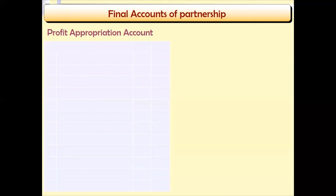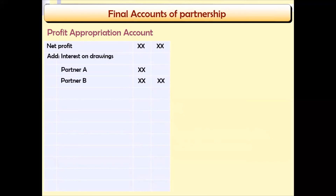The profit appropriation account is prepared as follows: beginning with the net profit reported for that year. The net profit is then distributed. First, interest on drawings is added back — if partners have taken drawings from the business and are paying interest on those drawings, assuming Partner A and Partner B, those interest amounts are added back to the net profit. Then interest on capital: if partners are earning interest from the partnership due to their capital investment, such interest is subtracted in the appropriation account.